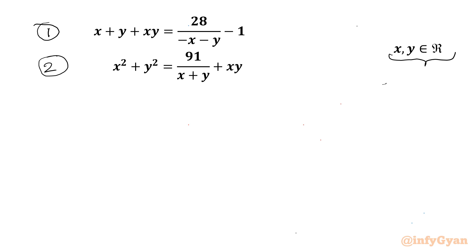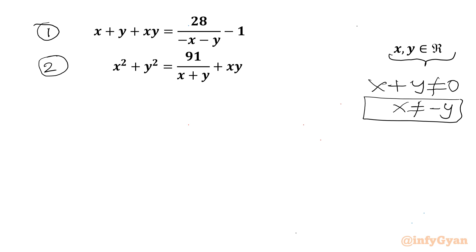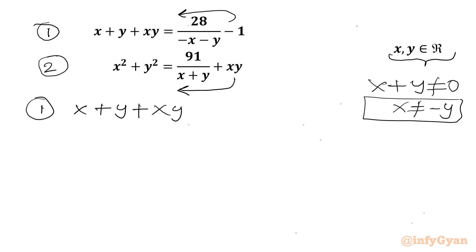Let's get started by noting our denominator x plus y cannot be 0, which means x cannot be equal to negative y. I will move the minus to the left-hand side first, and then move xy to the LHS as well. So let us rewrite equation 1: x plus y plus xy plus 1 equal to negative 28, taking minus common from the denominator so the denominator becomes x plus y.